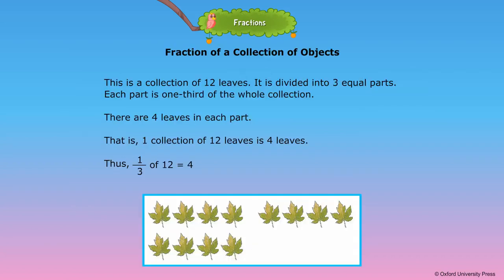Fraction of a collection of objects: this is a collection of twelve leaves divided into three equal parts. Each part is one third of the whole collection. There are four leaves in each part, so one third of twelve is equal to four.